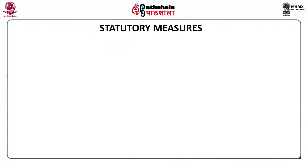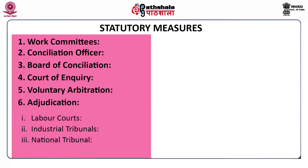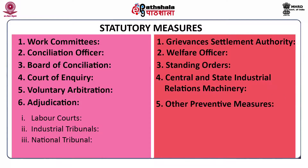Statutory measures are categorized into: works committee, conciliation officer, boards of conciliation, court of inquiry, voluntary arbitration, adjudication — which is further categorized into labour courts, industrial tribunal, and national tribunal — grievance settlement authority, welfare officer, standing orders, central and state industrial relations machinery, and other preventive measures.